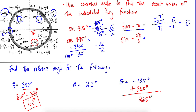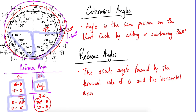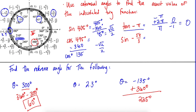Since −135 is negative, add 360: −135 plus 360 equals 225. Now 225 is in Quadrant III, so we do angle minus 180: 225 minus 180 gives a reference angle of 45 degrees.